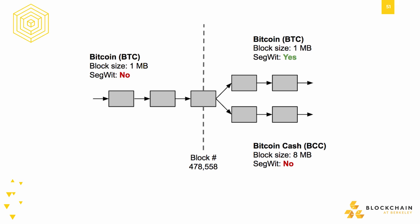As the Bitcoin scalability debate reached its climax, Bitcoin split into Bitcoin Cash, which increased the block size to 8MB, and Bitcoin, which kept its block size at 1MB but enabled Segregated Witness. This was on August 1, 2017, at block number 478,558.